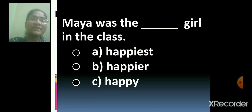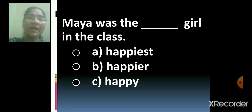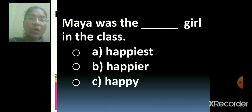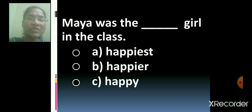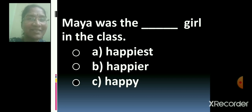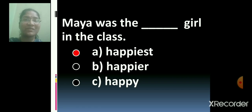Maya was the dash girl in the class. Maya was the happiest girl in the class, or Maya was the happier girl in the class, or Maya was the happy girl in the class? Which one will you select? Which one will be the correct option, children? Maya was the happiest girl in the class. Very good. So A is the correct option.